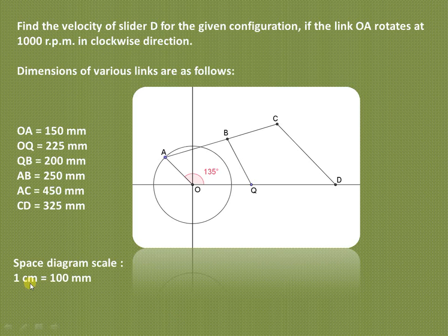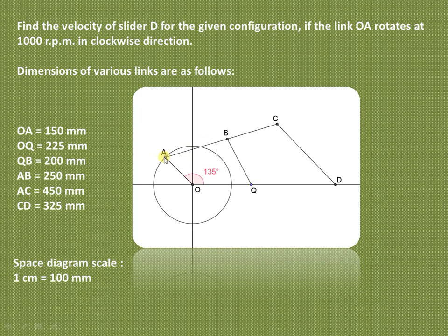We choose a scale of 1 cm = 100 mm for the space diagram. The crank is rotating in the clockwise direction at 1000 rpm. We have to find the velocity of the slider D, as well as the velocities of all other links and their corresponding angular velocities.